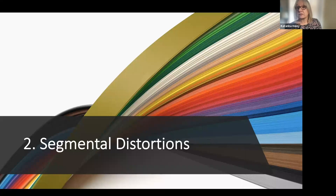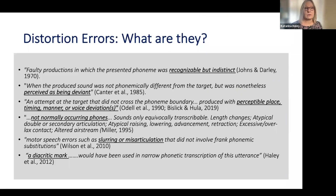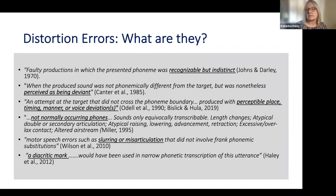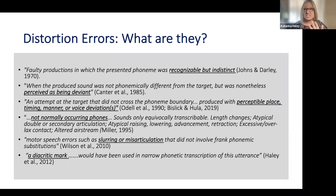Next I'm going to talk about segmental distortions, because this is a criterion for apraxia of speech. What are they? Often we feel like we know intuitively what a distortion is — something that's not clear but not exactly right. When you look at the literature and how people code this, it is described as: it's not a phonemic error, it doesn't change the meaning of words, it doesn't have the capacity to change the meaning of words, but it doesn't sound quite right.